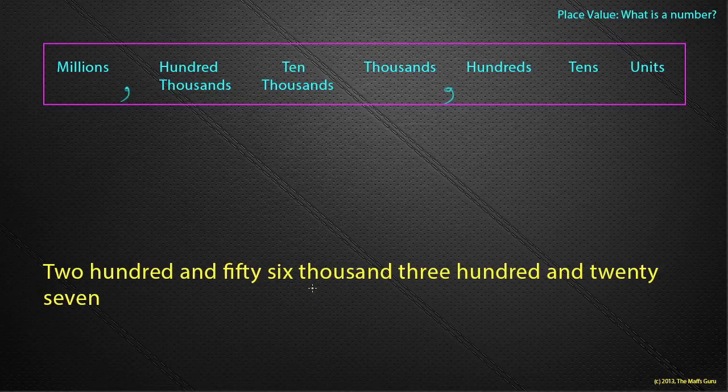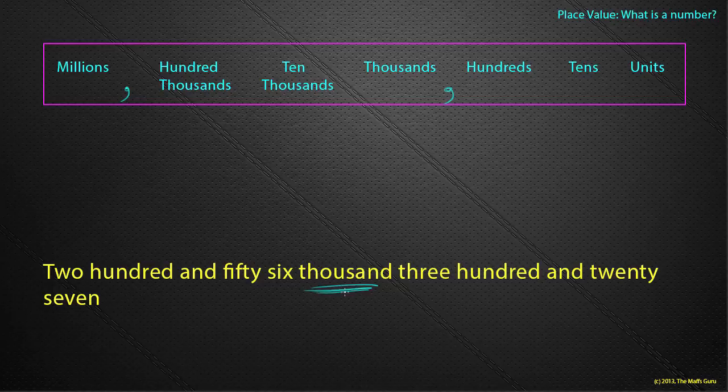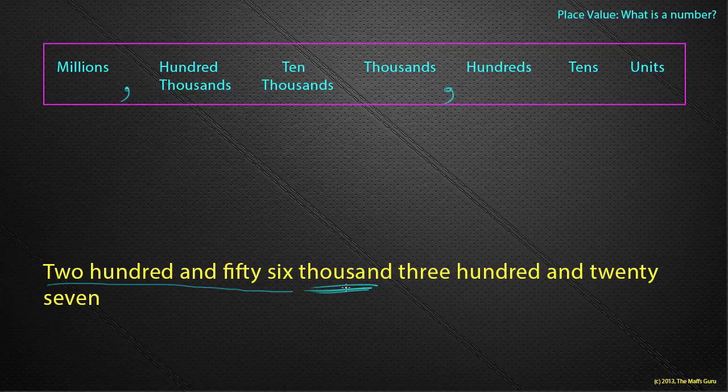Now. Two hundred. There's my thousand. There's the number word thousand. So, the three things before it or the words before it may stand for just the thousands. Two hundred and fifty-six thousand.